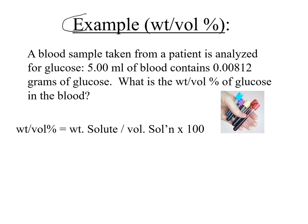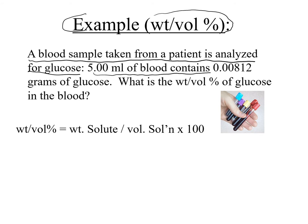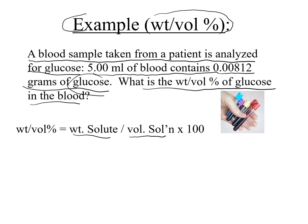Here's an example where you'll be asked to calculate the weight by volume percent. A blood sample taken from a patient is analyzed for glucose. Five milliliters of blood contains 0.00812 grams of glucose. What is the weight by volume percent of glucose in the blood? First, determine what the solute is — the solute is what's being dissolved, so our solute is glucose, with a weight of 0.00812 grams.